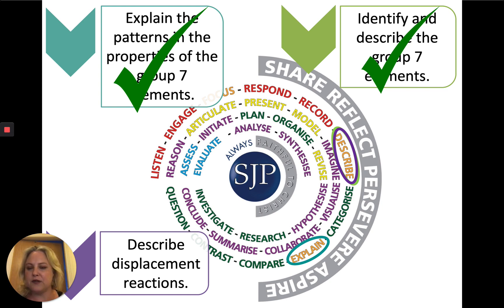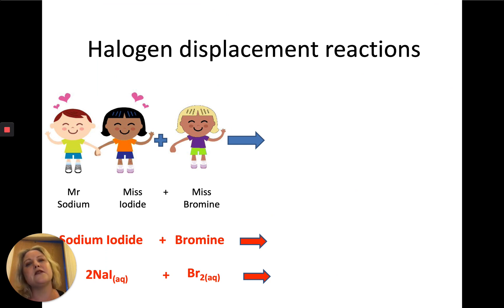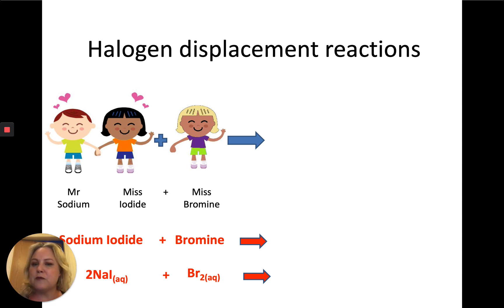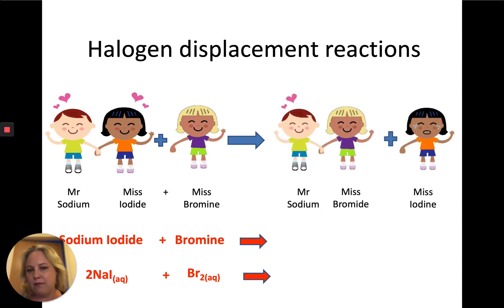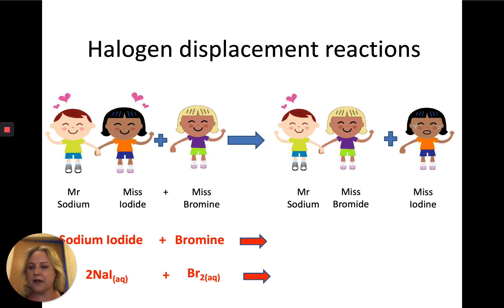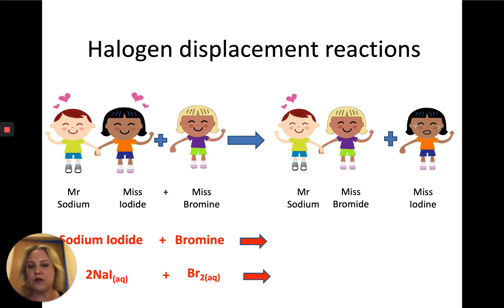Now we're going to look at displacement reactions. Halogens are involved in displacement reactions. Here's an example: we've got Miss Sodium Iodide, and Miss Bromine comes along. Miss Bromine is more reactive, so she steals Mr. Sodium from Miss Iodide, leaving poor Miss Iodide all alone — she displaces iodine. So iodine is no longer chemically bonded to sodium.